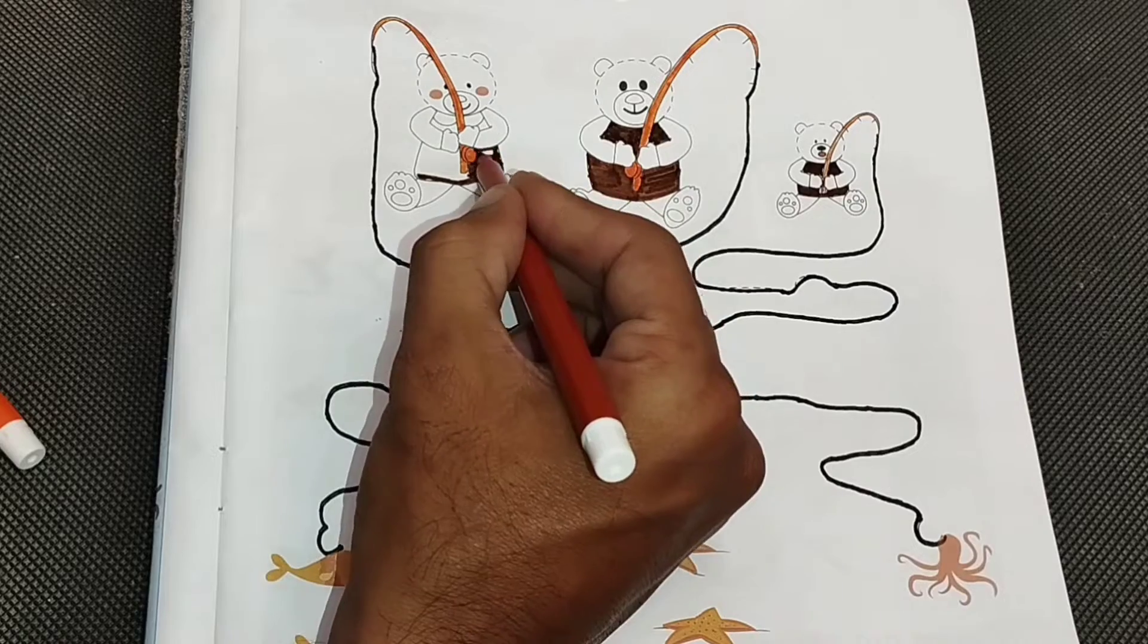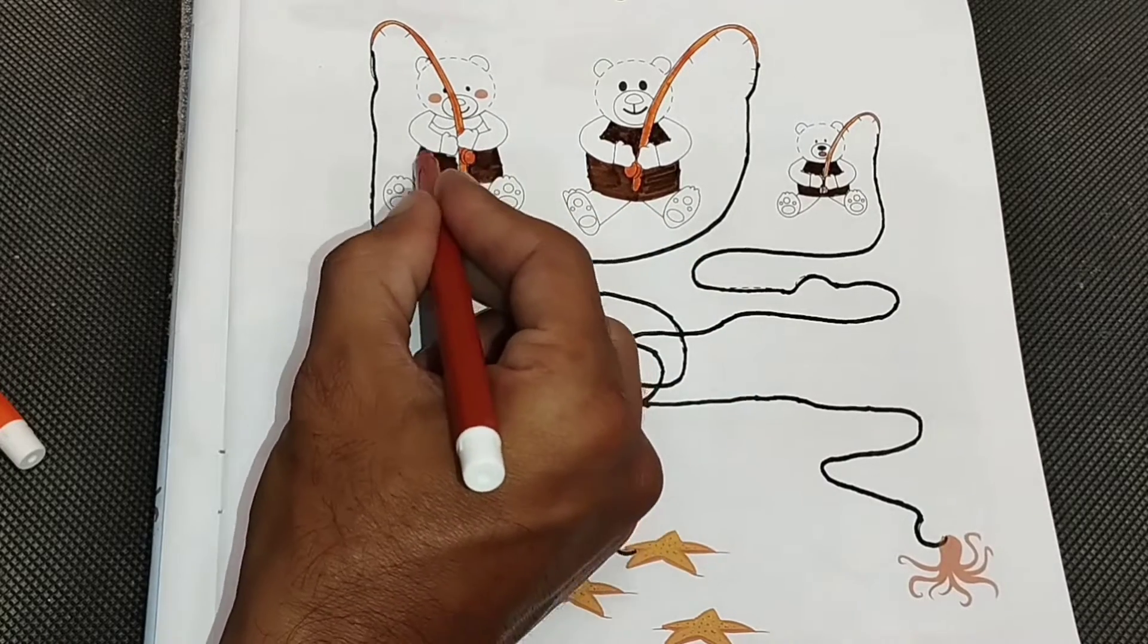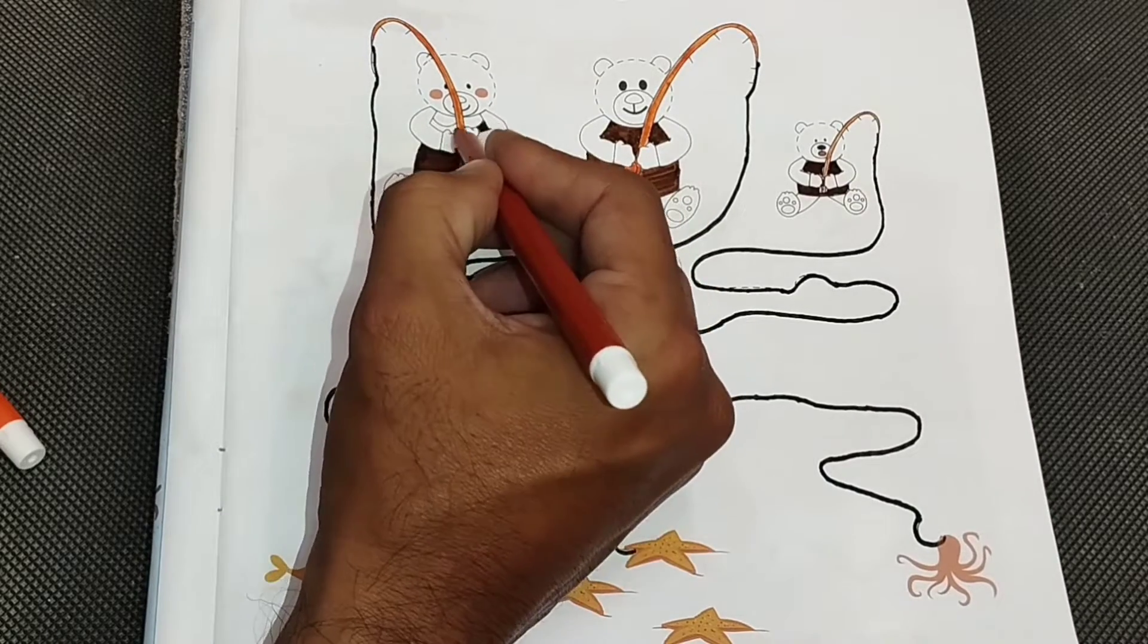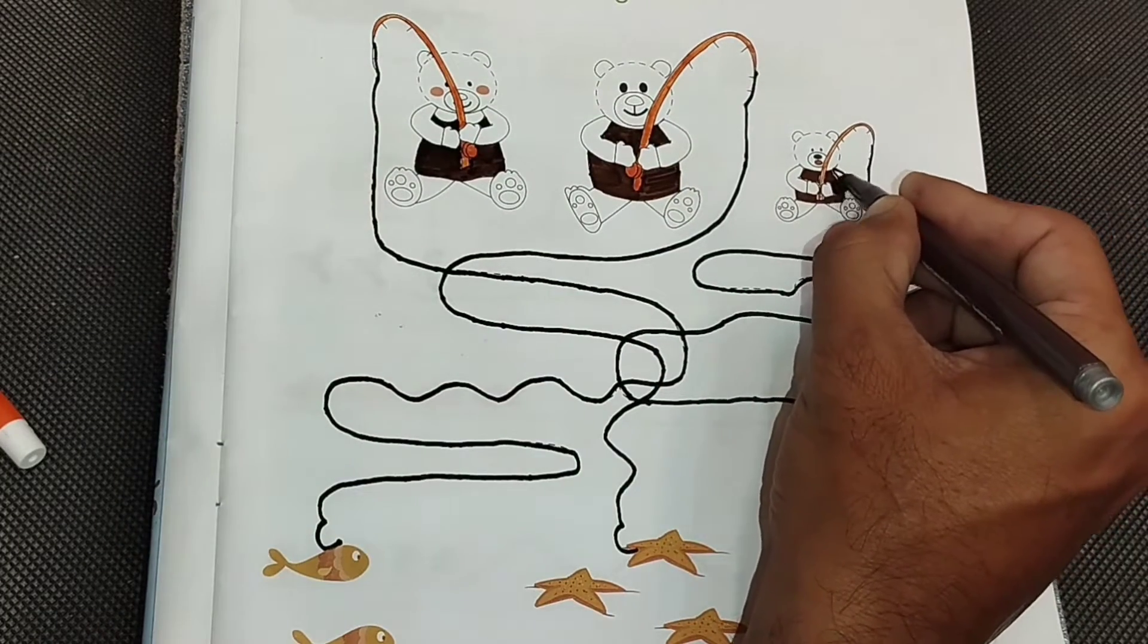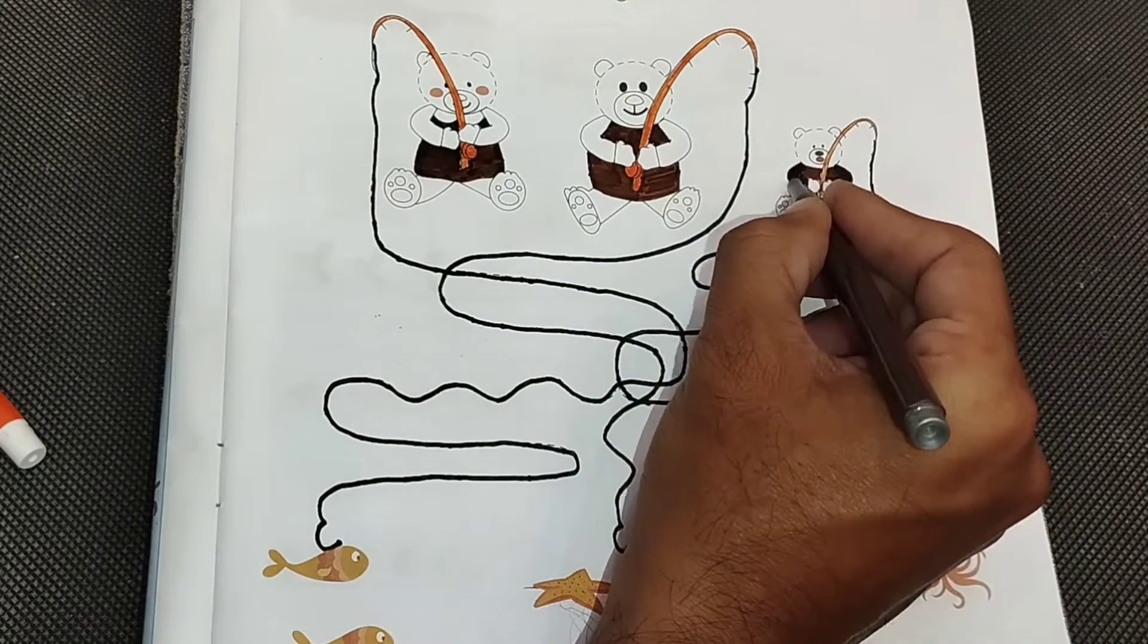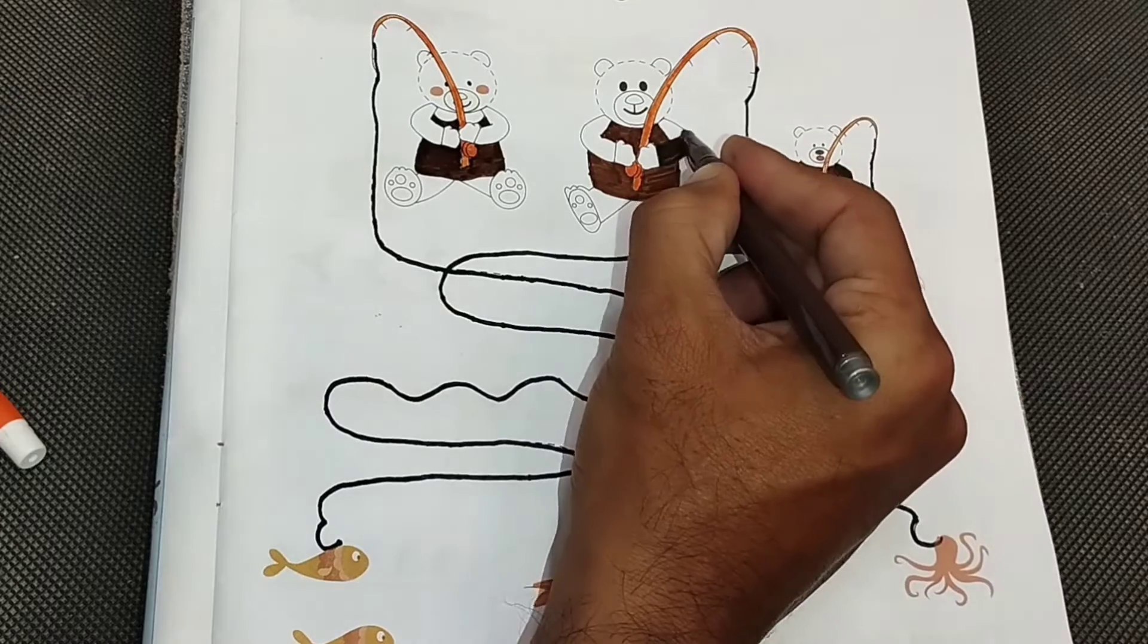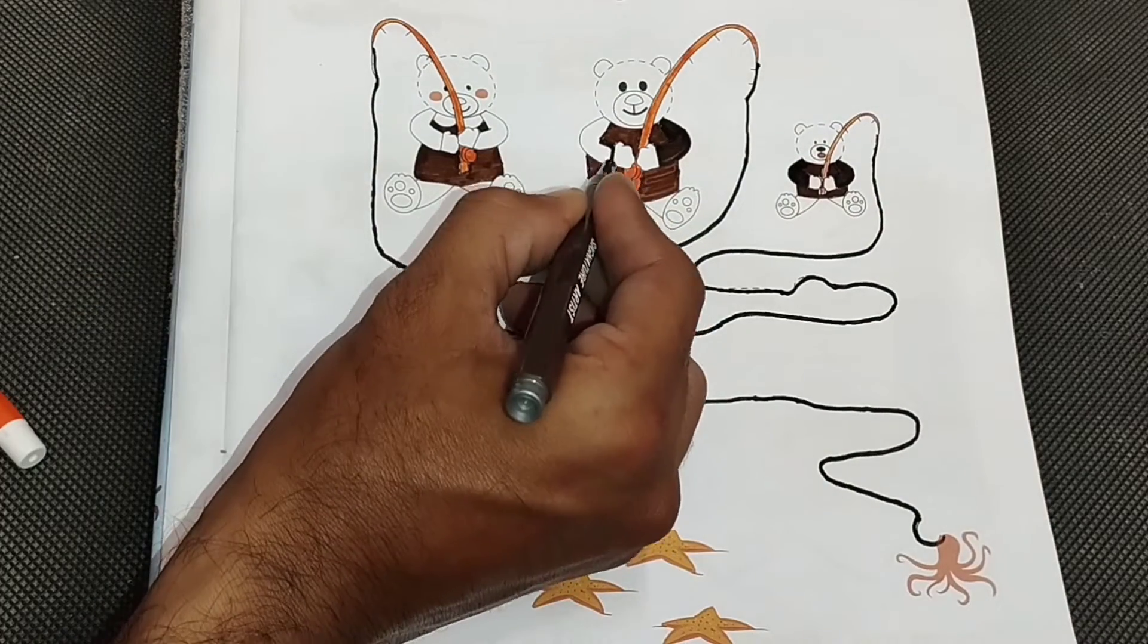I is for Igloo, I-I-Igloo. J is for Juice, J-J-Juice. K is for Kangaroo, K-K-Kangaroo. L is for Lion, L-L-L-Lion.